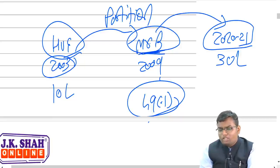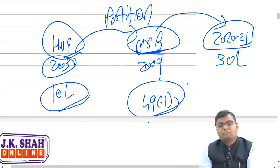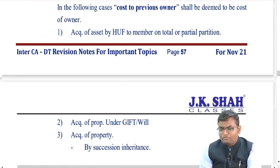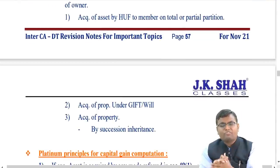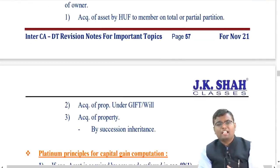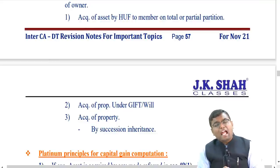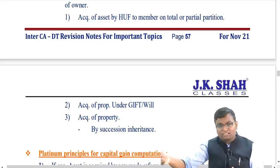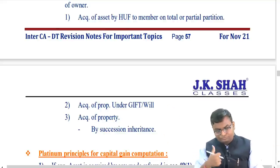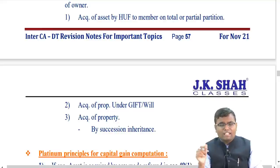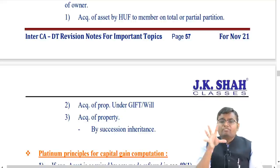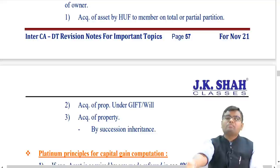Section 49(1) applies: when the asset is acquired by any mode covered under it, the cost of acquisition is the cost to the previous owner - here, Rs. 10 lakh. Section 49(1) covers: acquisition by HUF member on partition, acquisition under gift or will, acquisition under succession or inheritance. The principle: whenever the receipt of the asset was not taxable to you and the transfer was not taxable to the transferor, the cost to the previous owner becomes your cost of acquisition.